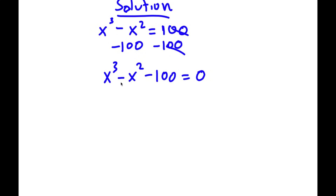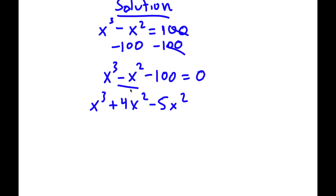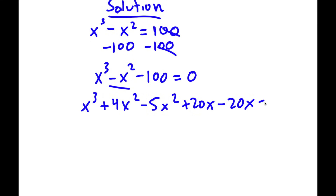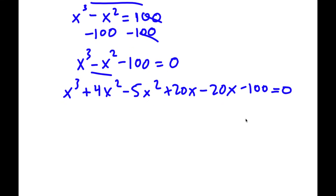I can actually rewrite this. I have x to the power of 3, and I'm going to rewrite negative x squared as 4x squared minus 5x squared, because 4x squared minus 5x squared is equal to negative x squared. I'm also going to add in positive 20x minus 20x, because these two will simply cancel out — they make no difference. And then I have my minus 100 at the end.